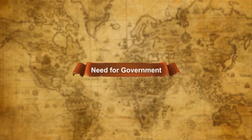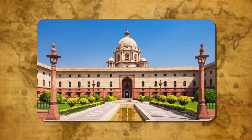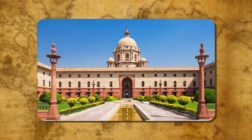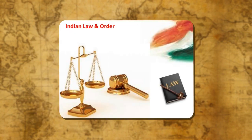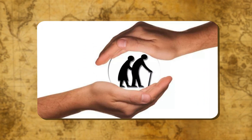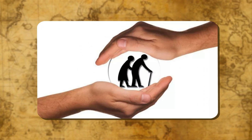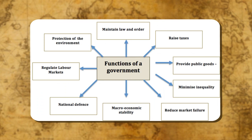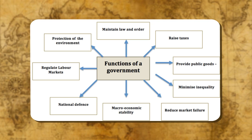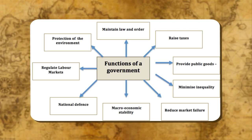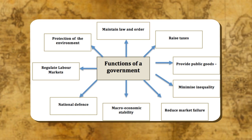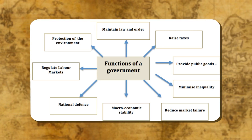Without government, the country or state would be like a disorganized mass with no means of collective action. The government is needed to maintain law and order in the country. It protects the country from intruders and looks after the welfare of the citizens. It performs many functions and takes a number of decisions to achieve government objectives. No single individual can take the right decisions, so we select people who understand people's needs and are mature by way of age.